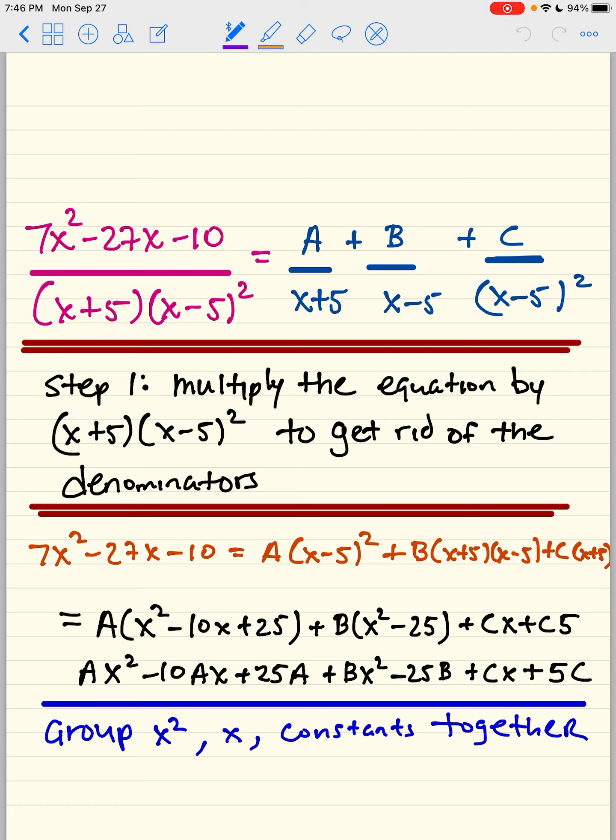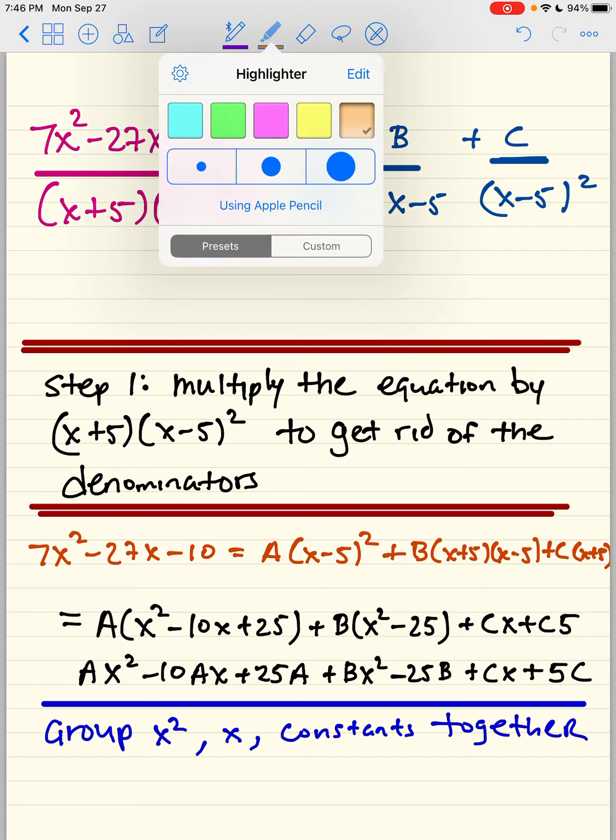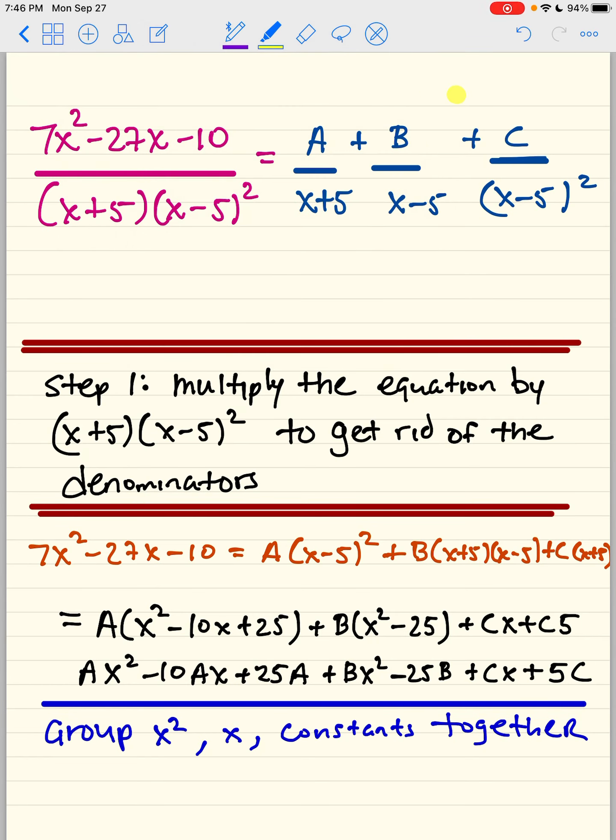So imagine I have this right here. This is my rational expression in pink, and basically, I want to decompose it into these partial fractions: A over x plus 5 plus B over x minus 5 to the first plus C over x minus 5 squared.